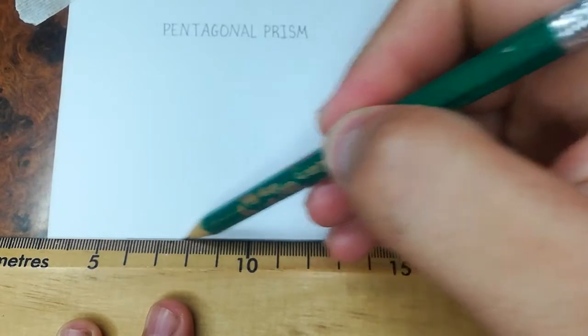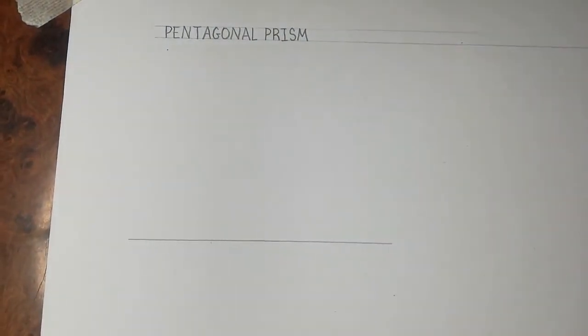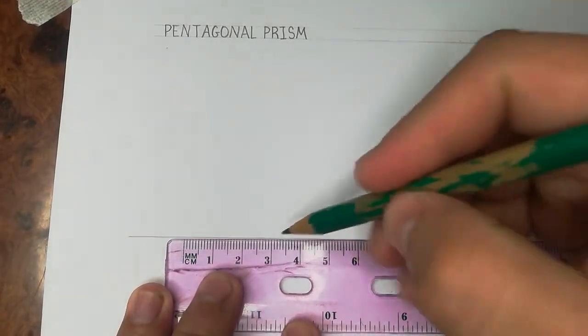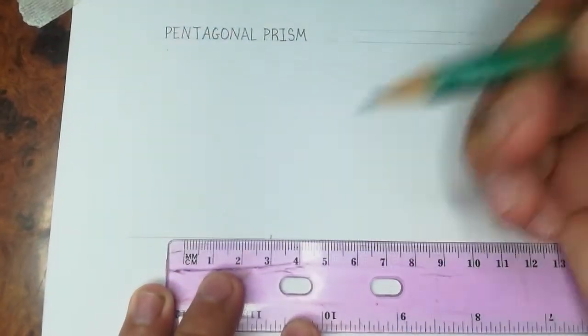To construct a pentagonal prism, the first thing we have to do is draw the pentagon in two-dimensional orientation. We begin by drawing the length of one of the sides. According to our information, the length of one of the sides was 30 mm.